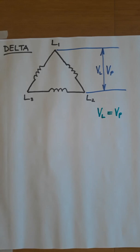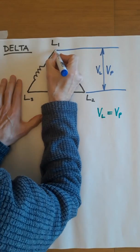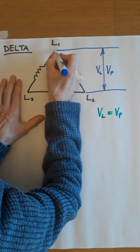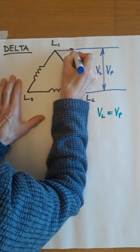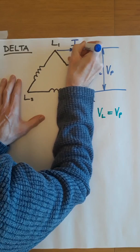If we come back to the currents, then that's where things begin to change. The current that comes out of this terminal, coming out of L1, is going to be the line current, IL.